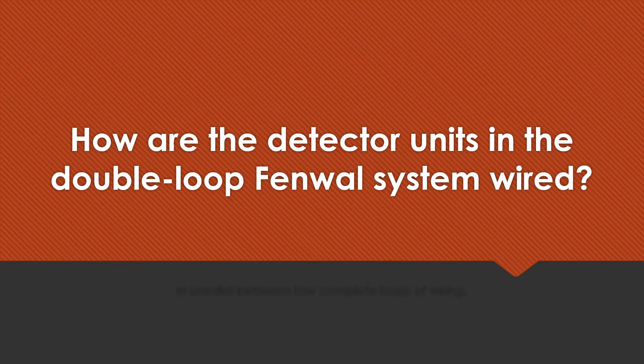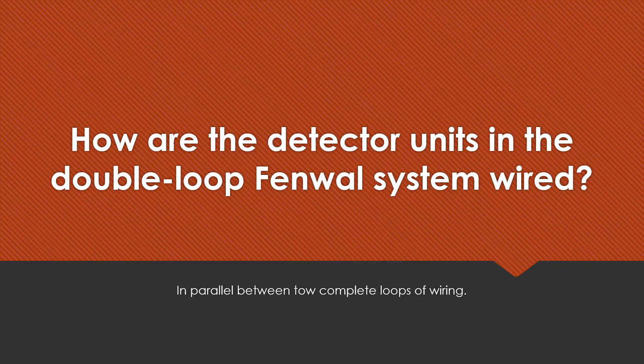How are the detector units in a double loop Fenwall system wired? In parallel, between two complete loops of wiring.